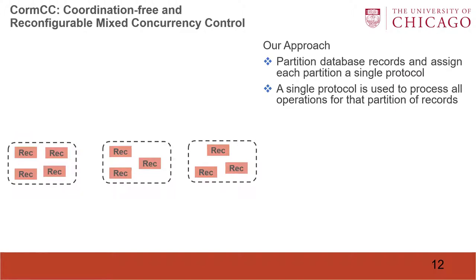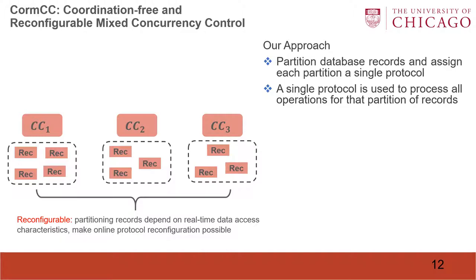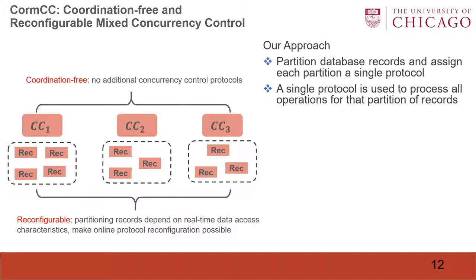Our approach is to partition database records and assign each partition a single protocol. A single protocol is used to process all operations for that partition of records. There are two benefits of this method. First, it is reconfigurable, which means we partition records depending on real-time database and data access characteristics, making online protocol reconfiguration possible. Second, it is coordination-free, which means no additional concurrency control protocols are introduced, because we let one protocol process all operations for that partition of records.